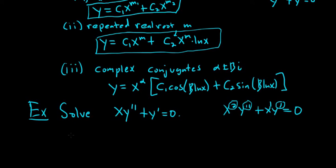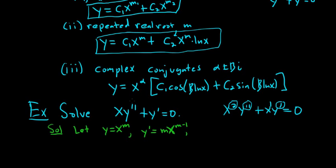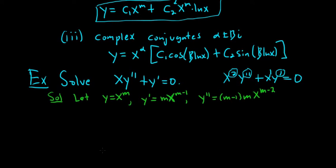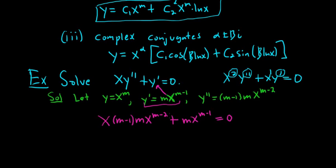Our first step is to let y equal x to the m. Using the power rule, the first derivative y prime equals m x to the m minus 1, and the second derivative y double prime equals m(m minus 1) x to the m minus 2. Now we plug everything into the differential equation: x times m(m minus 1) x to the m minus 2 plus m x to the m minus 1 equals 0.